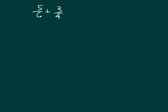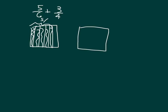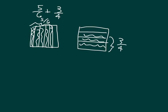Here's one last problem: 5-6ths plus 3-4ths. Let's model each. For 5-6ths, we use vertical lines — 5 lines to divide into 6 parts — and we're looking at 5 of those parts, or 5-6ths. For 3-4ths, we use horizontal lines: 3 lines for 4 parts, and we're looking at 3 of those. Neither model is quite a whole, so the answer is less than 2 but looks bigger than 1.